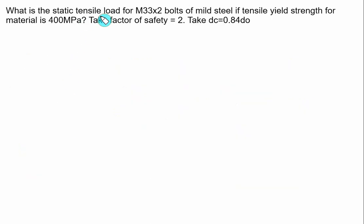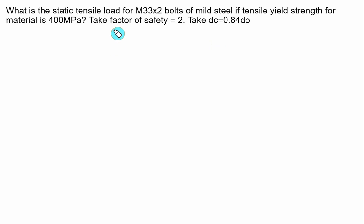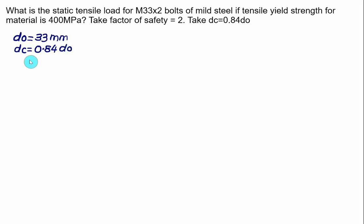What is the static tensile load for an M33×2 bolt? Nominal diameter D0 = 33 mm. The tensile strength of the material is 400 MPa with factor of safety = 2. Given DC = 0.84 × D0, we calculate core diameter DC = 0.84 × 33 = 27.72 mm. Failure is tensile at the root area.